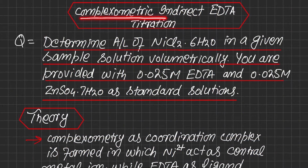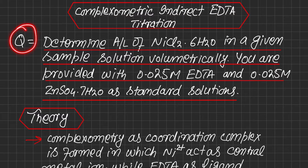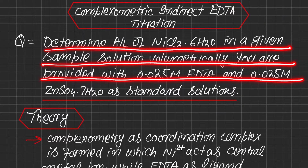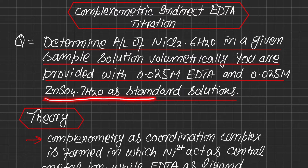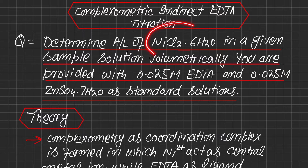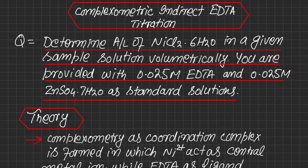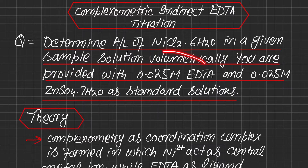This is a complexometric indirect EDTA titration. The question is to determine the amount per liter of nickel chloride·6H₂O in a given sample solution volumetrically. You are provided with 0.025 molar EDTA and 0.025 molar zinc sulfate·7H₂O as standard solutions. In this titration, our analyte is nickel chloride·6H₂O.